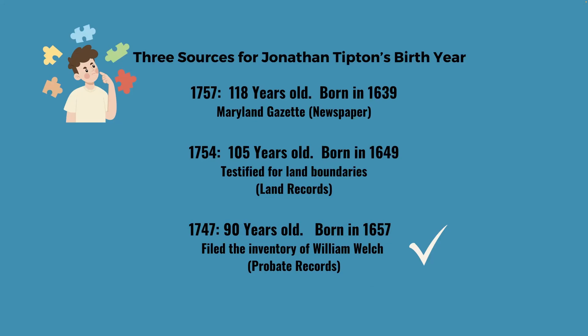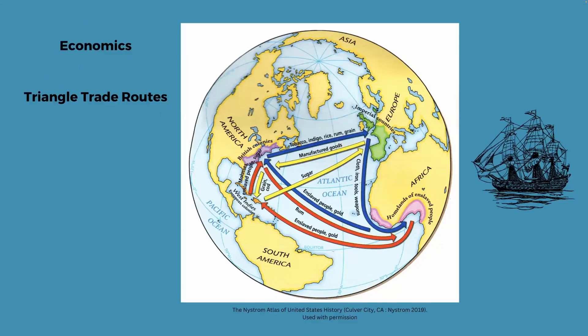We have found no records of Jonathan Tipton in Jamaica because Port Royal was destroyed. But there are plenty of records of Jonathan in Maryland. So why would someone from Jamaica go to Maryland? What were the push and pull factors?